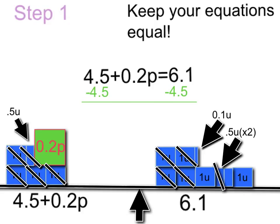If we do that, we have to do the same thing to the right side of the equal sign. Because if you think of it as a scale, and you have 4 and 5 tenths plus 2 tenths p on one side of the fulcrum, or equal sign, and 6 and 1 tenth on the right side, and you take away 4 and 5 tenths from the left side, then in order to keep it equal, you have to take away the same amount from the right side. Otherwise your equation is going to be uneven and all messed up.